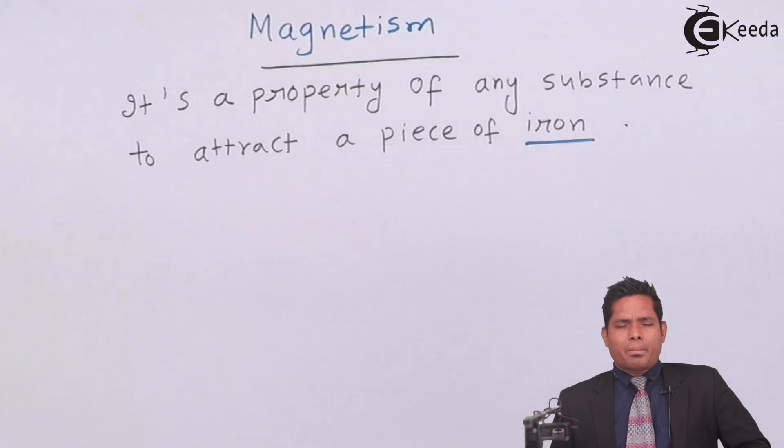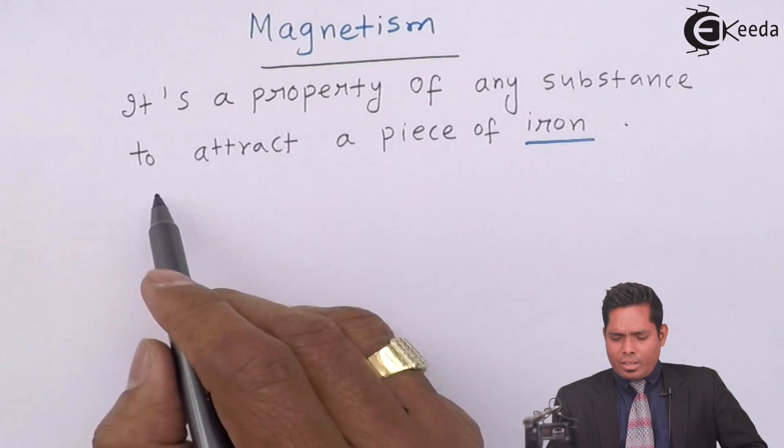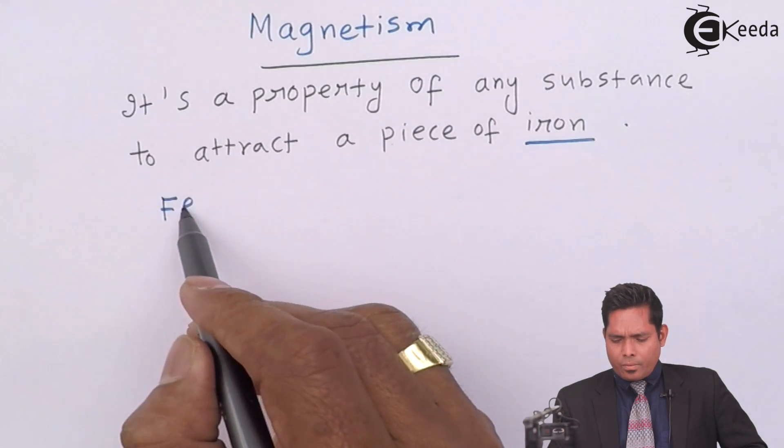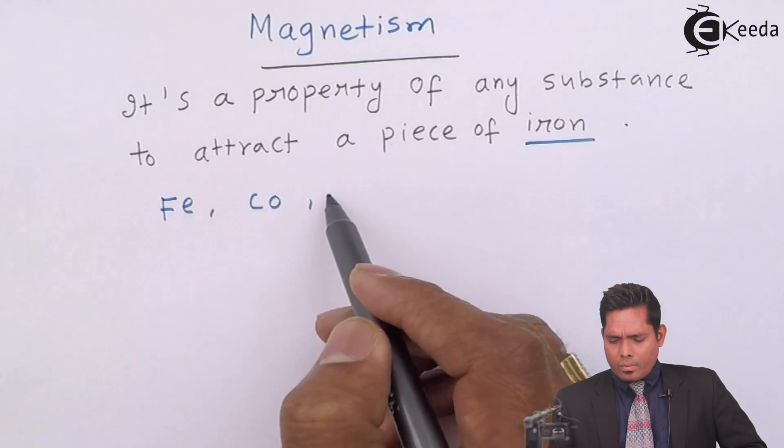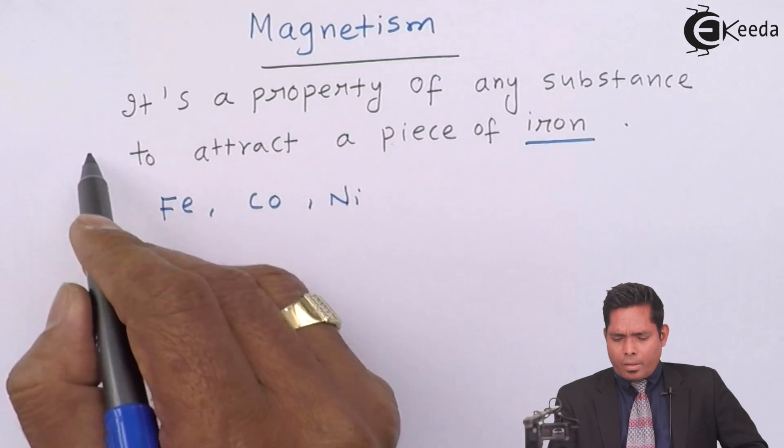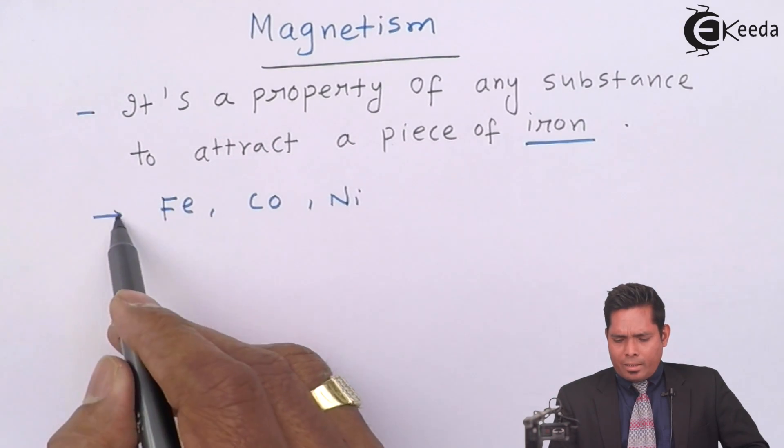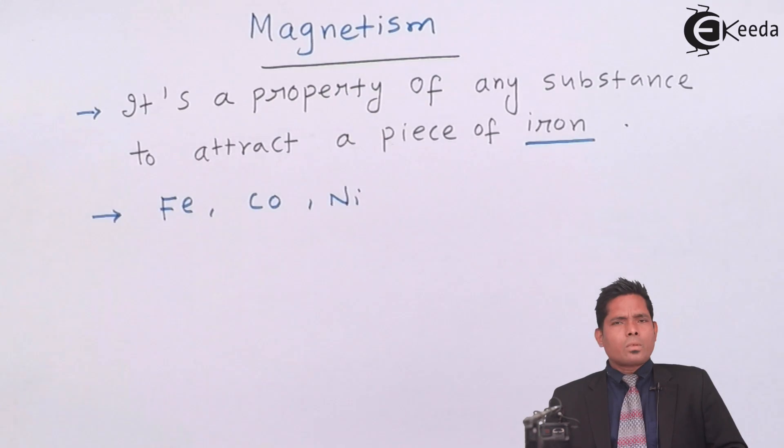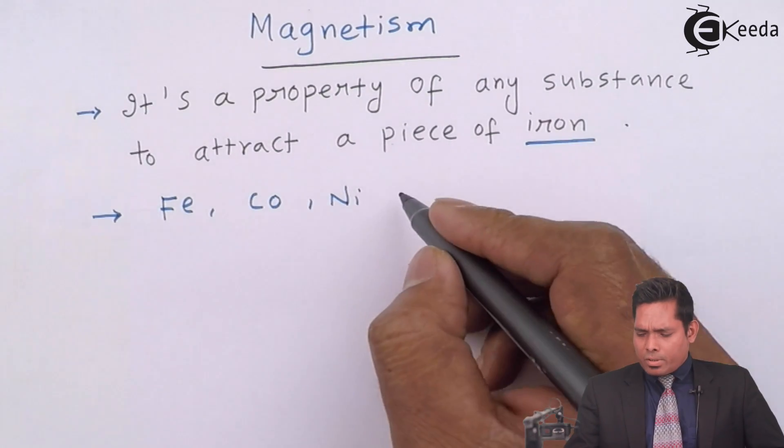Some materials are called paramagnetic, others are called diamagnetic. So all these materials are magnetic materials. But iron, cobalt, nickel, these are the substances which are called ferromagnetic substances.